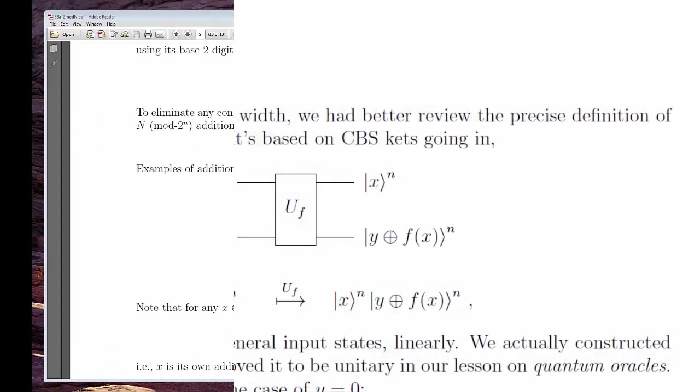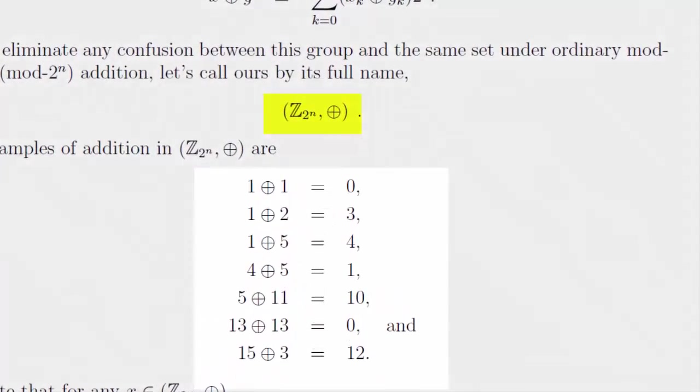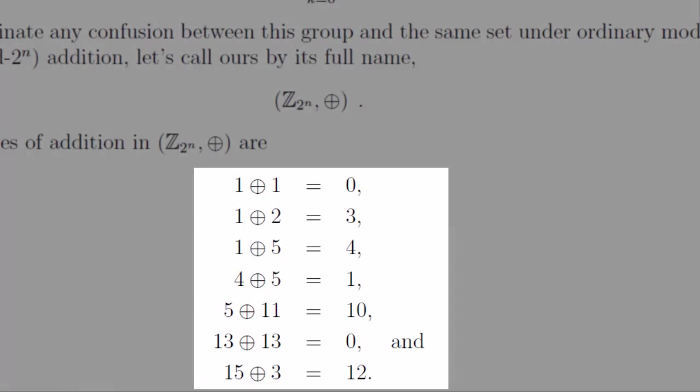So we formally introduce the group of integers Z sub 2 to the N with this strange addition. It's the same addition as in the vector space I just described, mod 2, applied to each of the number's binary digits.